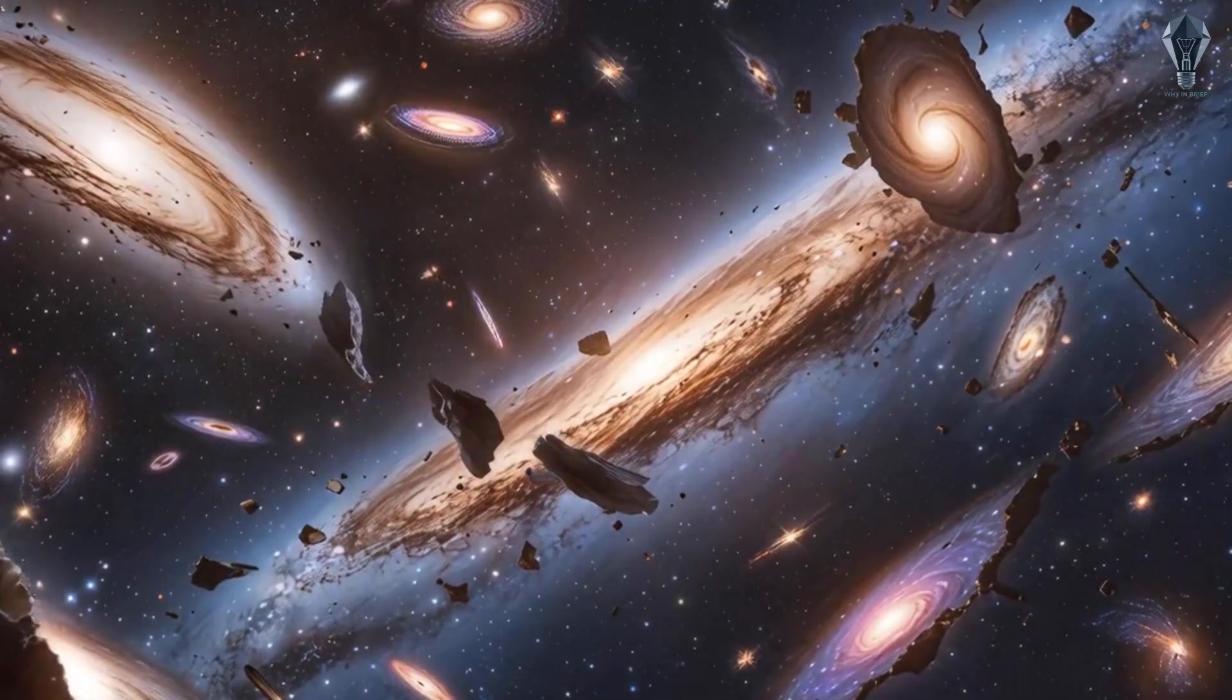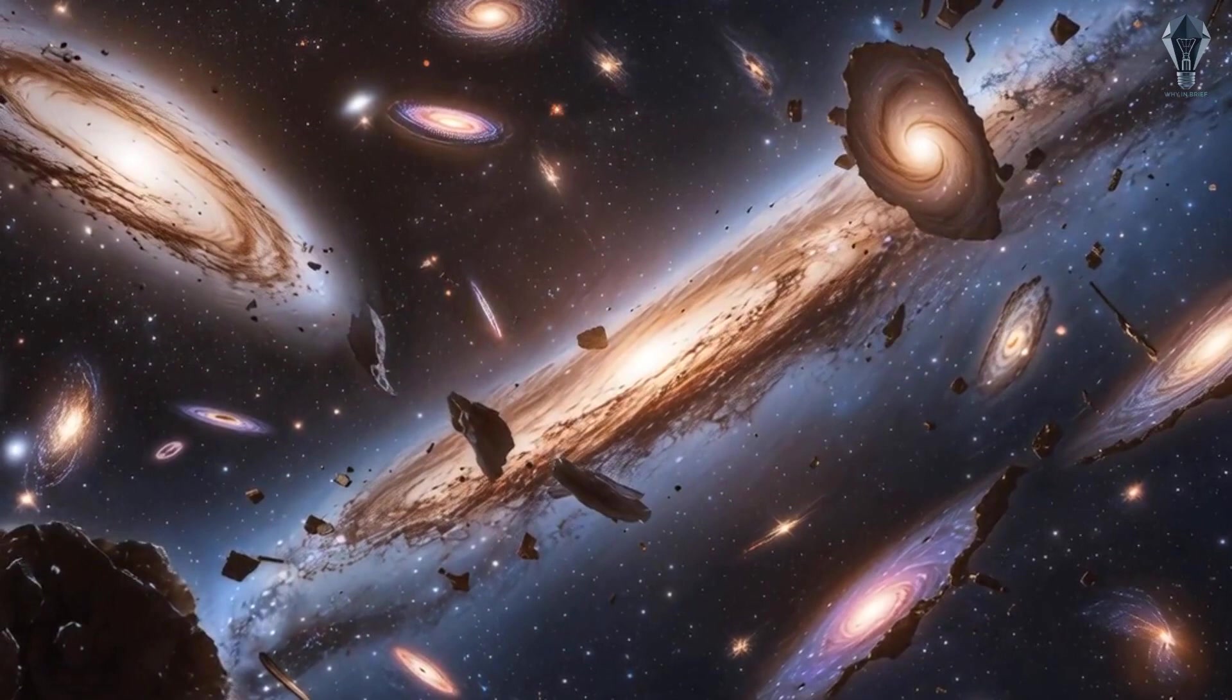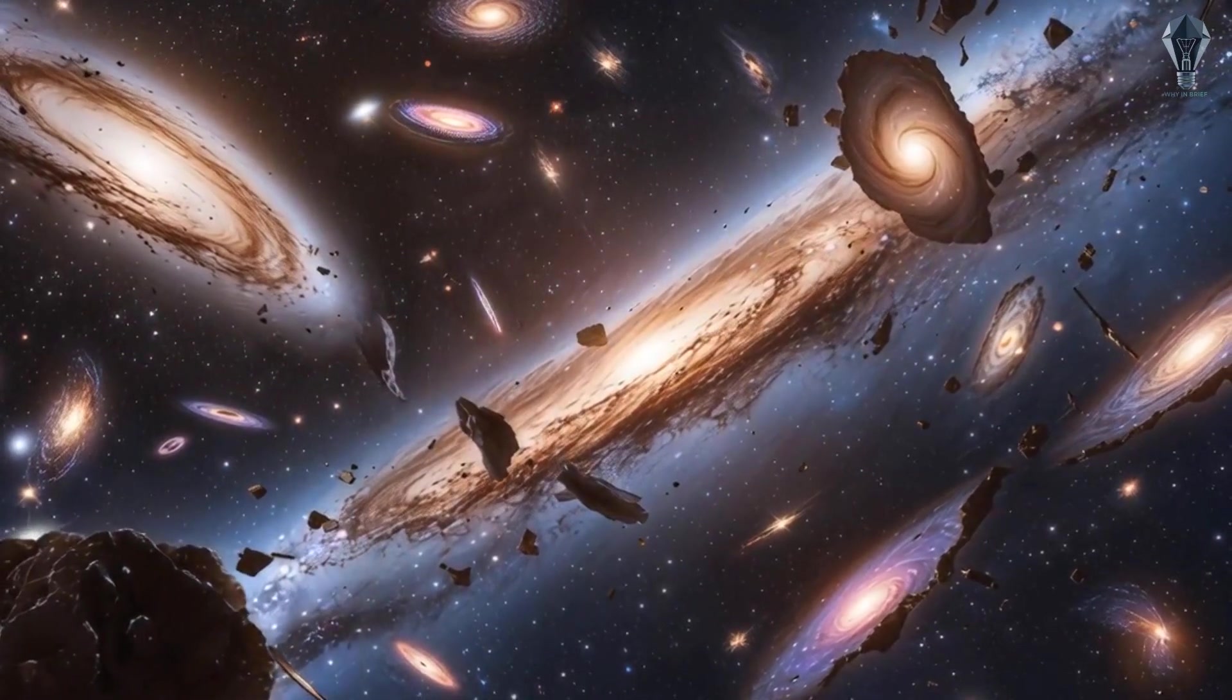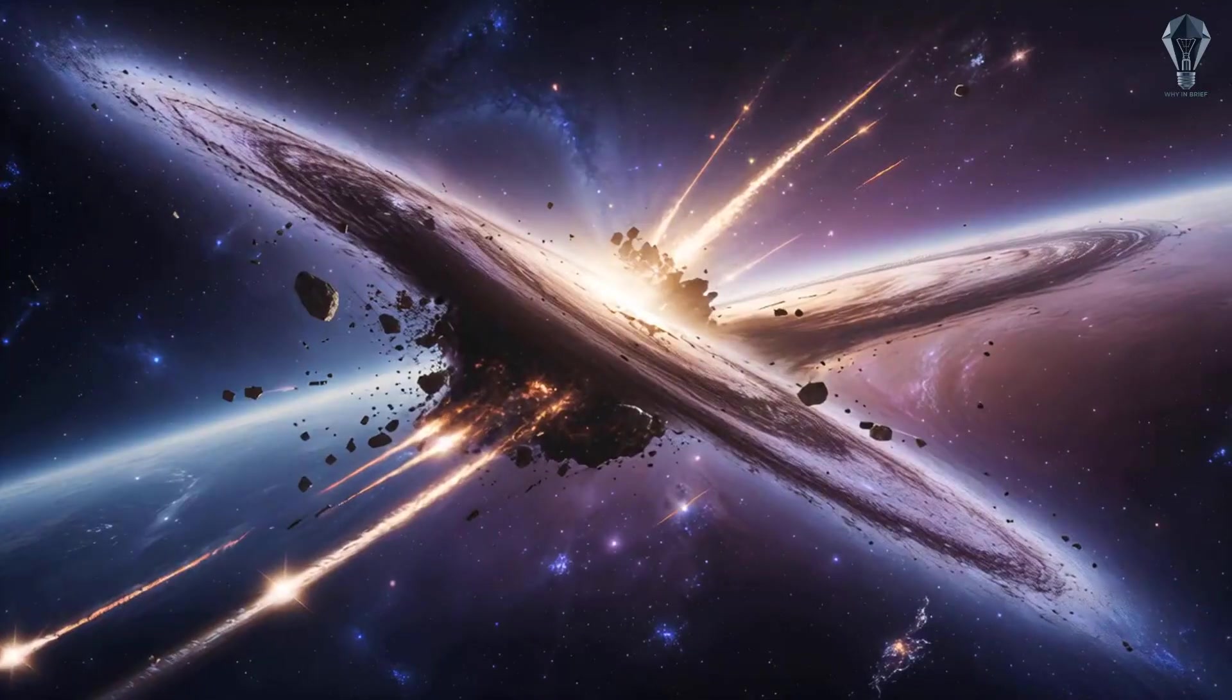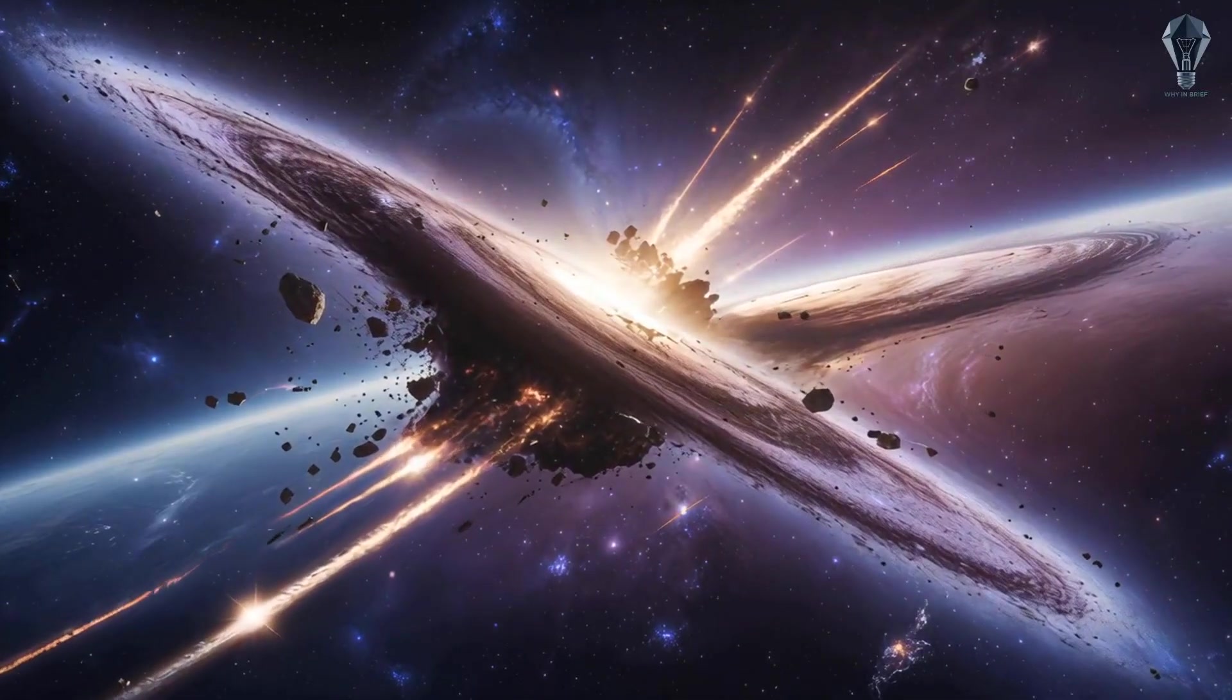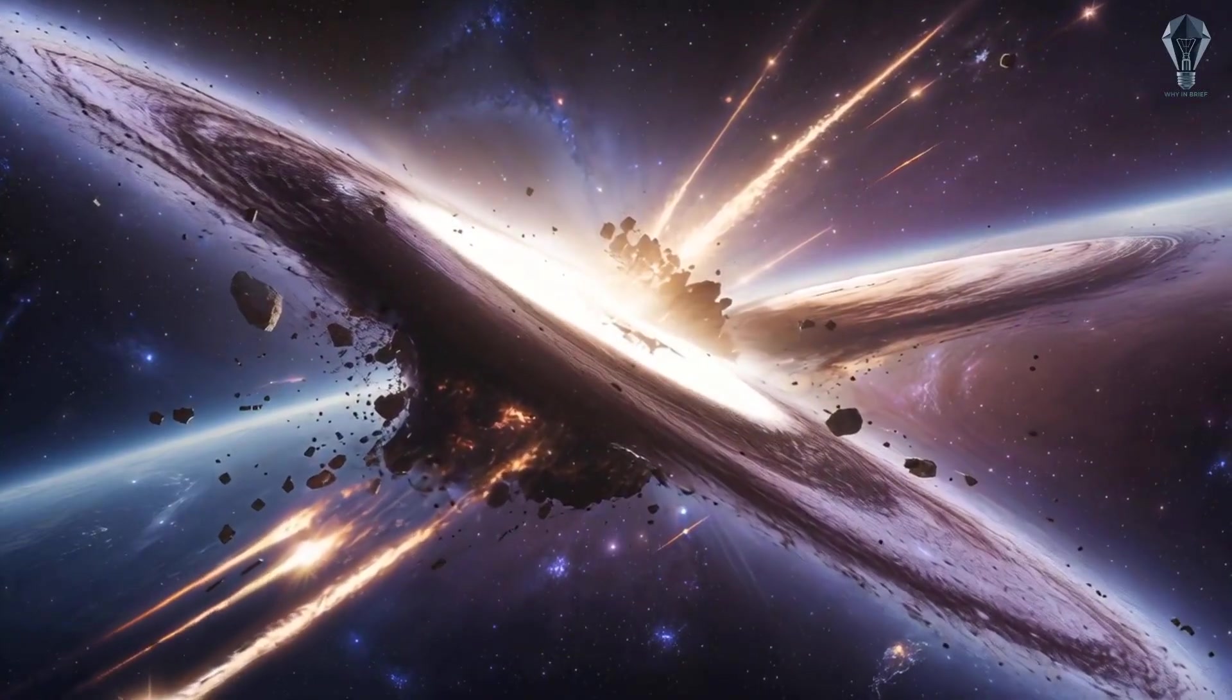Andromeda's satellite galaxies are a chaotic mess, unlike our Milky Way's more orderly companions. It's like they've been through a cosmic demolition derby. Evidence suggests Andromeda itself had a massive collision a few billion years ago, which could have scattered its satellites.